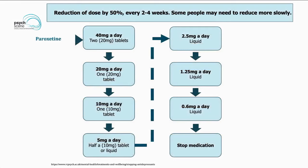Now let's look at how to practically consider a reduction, from the Royal College of Psychiatrists guidance on stopping antidepressants. Using paroxetine as an example: one approach is reducing by 50% every two to four weeks — starting at 40 mg/day, dropping to 20, then 10, then 5, then going very slowly. Because of the hyperbolic dose-response curve, from 5 mg down to 0, SERT inhibition reduction is highest — this is where liquid formulations should be considered.